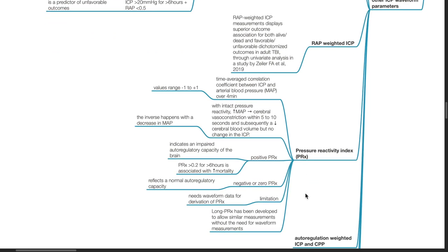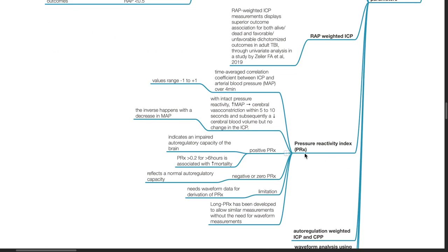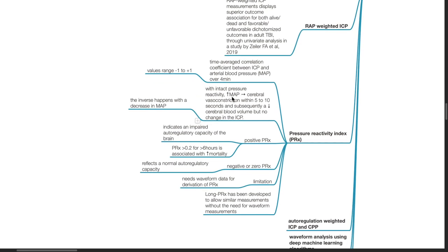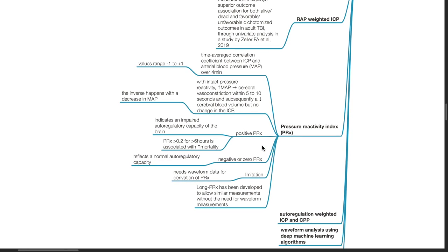Pressure reactivity index or PRX. It is the time average correlation coefficient between ICP and arterial blood pressure over 4 minutes. Values range negative 1 to positive 1. With intact pressure reactivity, increase in MAP results in cerebral vessel constriction within 5 to 10 seconds and subsequently a decrease in cerebral blood volume but no change in the ICP. The inverse happens with a decrease in MAP. A positive PRX indicates an impaired autoregulatory capacity of the brain. PRX of more than 0.2 for more than 6 hours is associated with increased mortality.